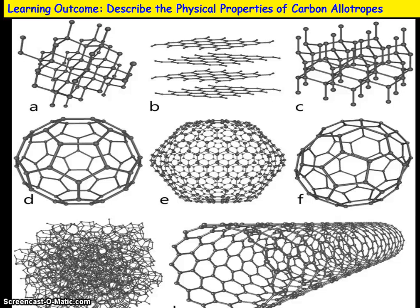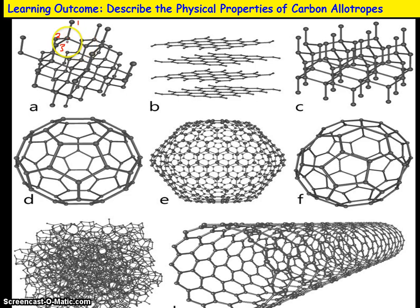Starting with diamond, looking at the general arrangement: diamond is where each carbon is bonded to four other carbons. If we take this as the central carbon, we've got bonds 1, 2, 3, and then you can see this bond coming down here — 4. So each carbon is bonded to four others. Obviously this structure just goes on forever, it repeats itself, so it's a giant crystalline structure.